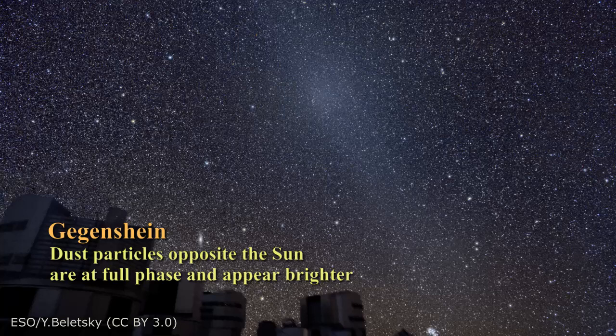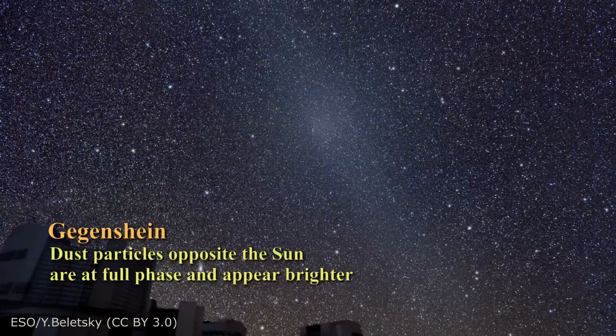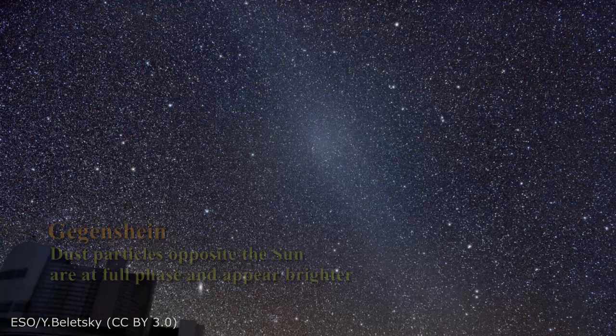And if you're really, really lucky, you might see that zodiacal light encompasses the entire ecliptic. Where could this dust have come from?